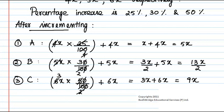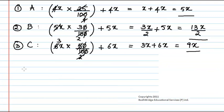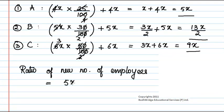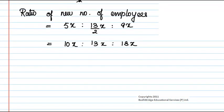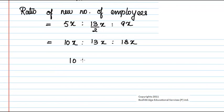After incrementation, the ratio of new number of employees is 5x : 13x/2 : 9x. Multiplying all by 2, we get 10x : 13x : 18x.